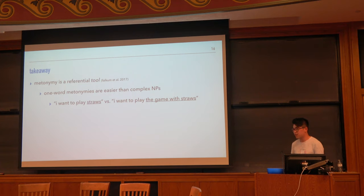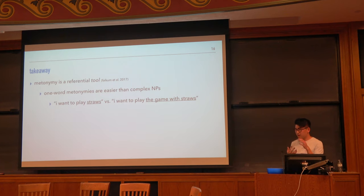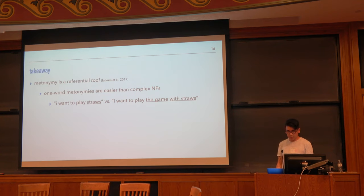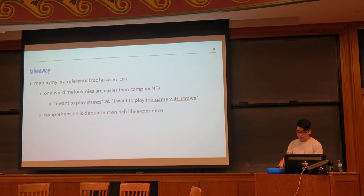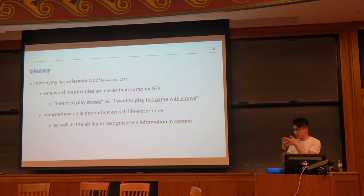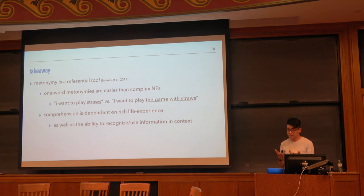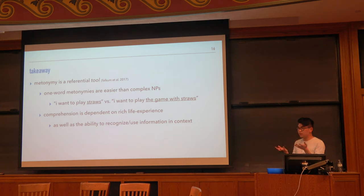Something like, if you're talking about what game you want to play, a child can say I want to play straws rather than I want to play the game with straws. One thing we can learn from that is that metonymy isn't this exotic phenomenon — it's something like nicknaming, shortcutting, and we have a lot of devices to do that in our language. The other side is that successful comprehension is dependent on a rich life experience as well as the ability to make use of contextual information. When you don't get a context and just get a metonym out of the blue, it's up to you as the comprehender to come up with a possible context to license that situation. This difference helps us understand that reported production-comprehension asymmetry.